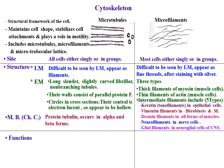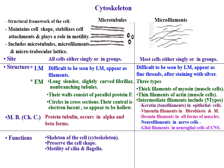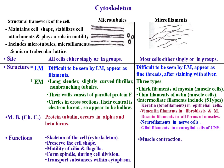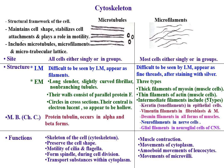Functions of microtubules: they form the skeleton of the cell cytoskeleton, thus preserving cell shape. Microtubules help motility of cilia and flagella, form the spindle during cell division, and are concerned with the transport of substances within the cytoplasm. Microfilaments are concerned with fine movements: muscle contraction, cytoplasmic movements, movements of leukocytes, movements of microvilli, and separation of cytoplasm during cell division.